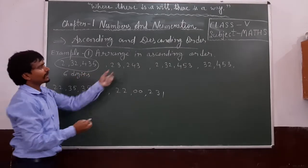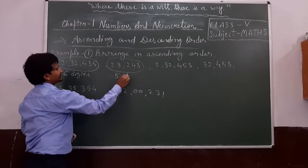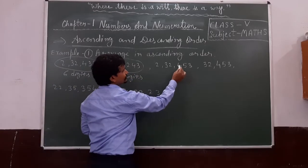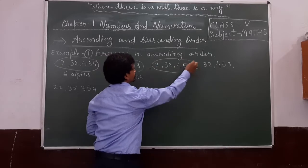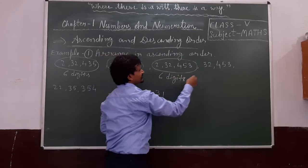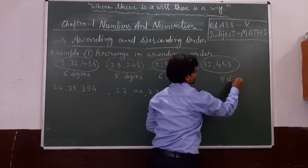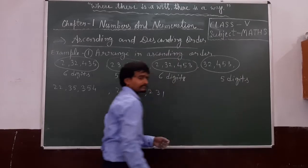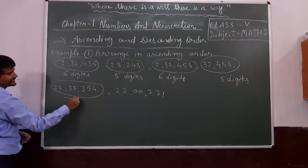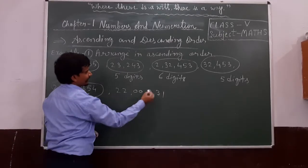In the next number there are 1, 2, 3, 4, 5 — 5 digits. In the next number there are 1, 2, 3, 4, 5, 6 — 6 digits. Similarly in the next, 5 digits. And the remaining numbers each have 7 digits.